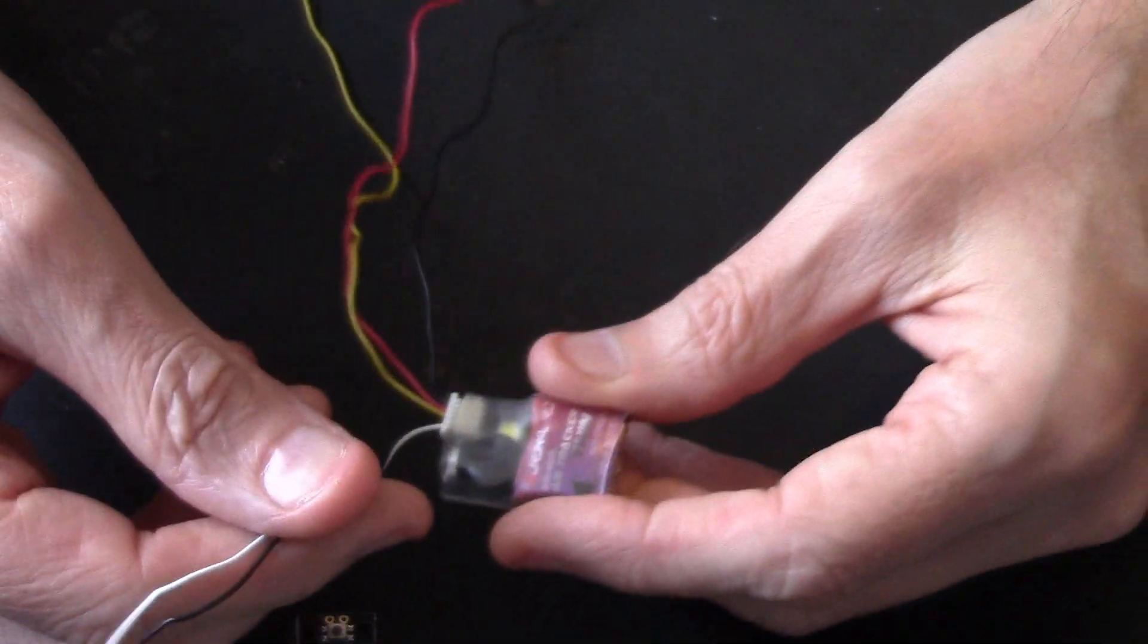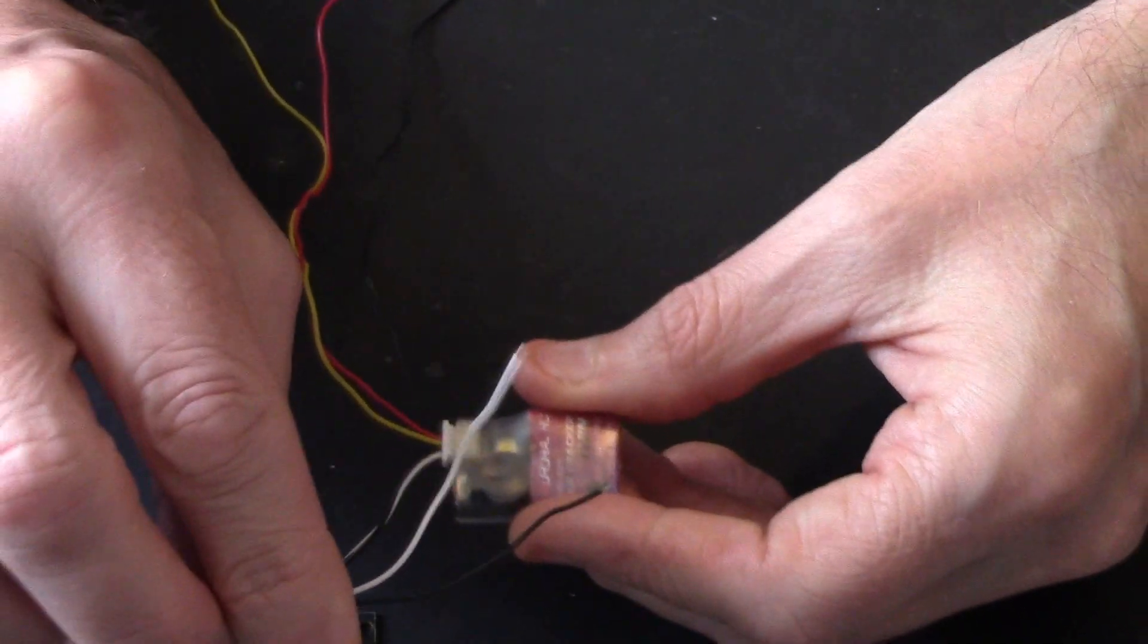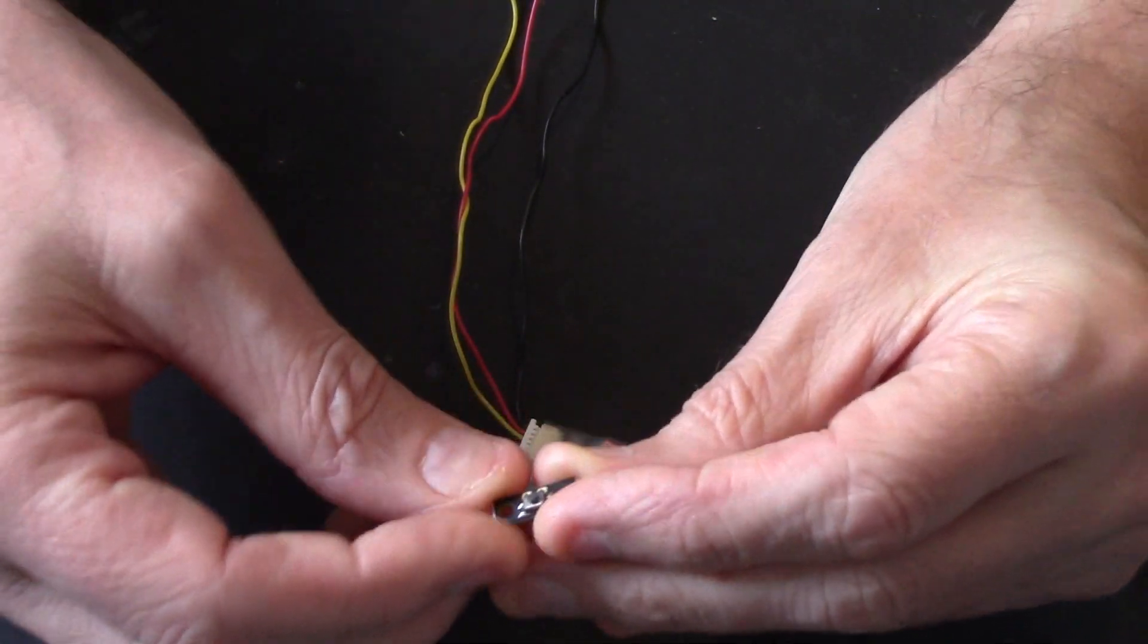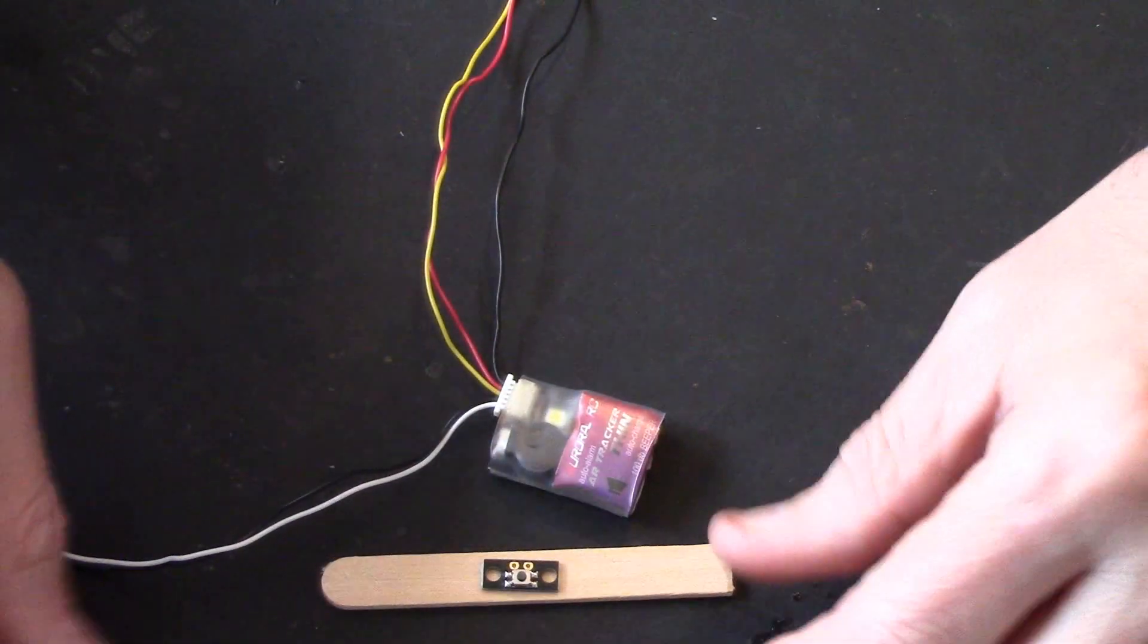You can have it buried underneath your flight control board if you want—well, maybe not there—but you can have it buried in your quad with these two cables coming out with a little button. Now, there's two little screw holes on here. I don't recommend screwing it down. I'll put that back on there so you can see, but I don't recommend screwing that down onto your frame or anything like that.